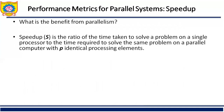What is the benefit from parallelism? The answer is speedup. When evaluating a parallel system, we are often interested in knowing how much performance gain is achieved by parallelizing a given application over the sequential implementation. Speedup is the measure that captures the relative benefit of solving the problem in parallel. It is defined as the ratio of the time taken to solve the problem on a single processing element to the time required to solve the same problem on a parallel computer with P identical processing elements. It is denoted by capital S.